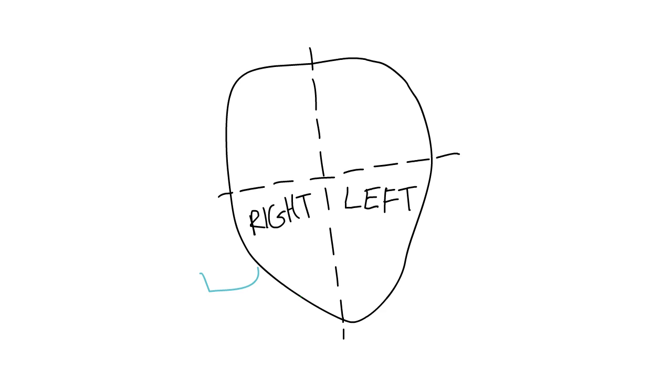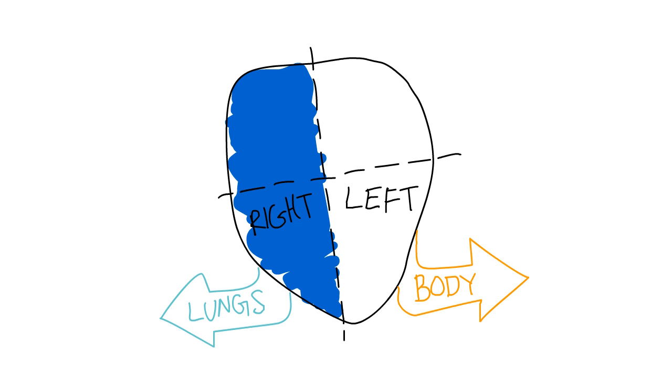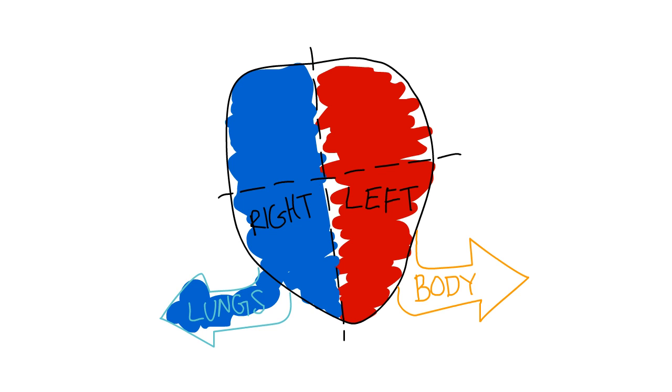In the normal heart, the right heart pumps blood to the lungs and the left heart pumps blood to the body. The right heart contains oxygen-poor blue blood, which is pumped through the lungs to be filled with oxygen. The left heart contains oxygen-rich red blood, which carries oxygen to the body.